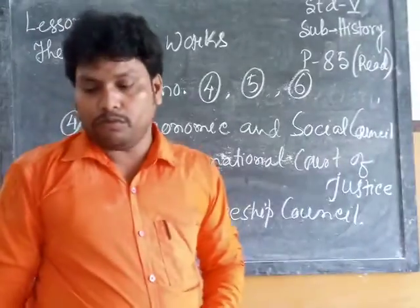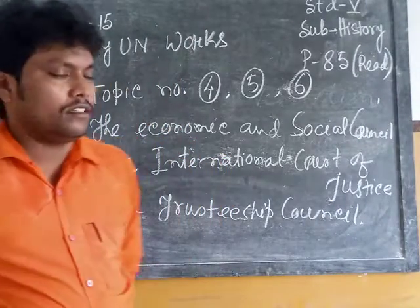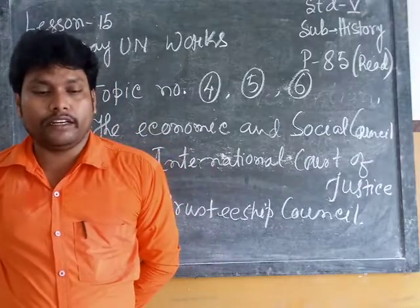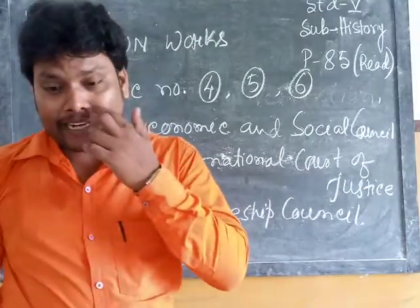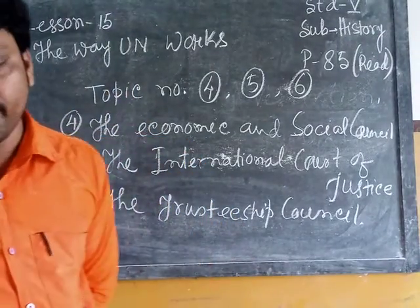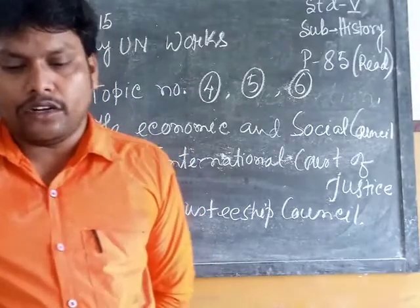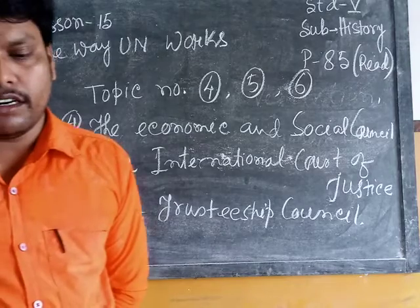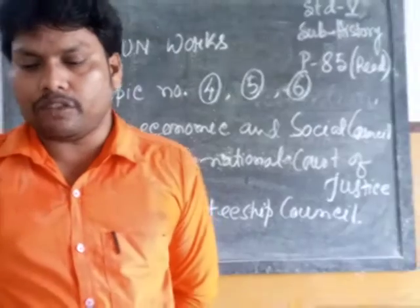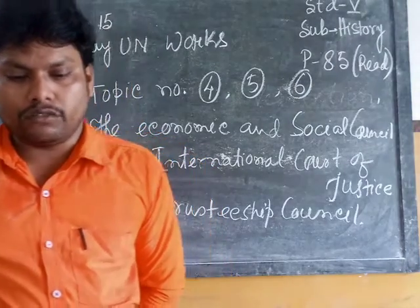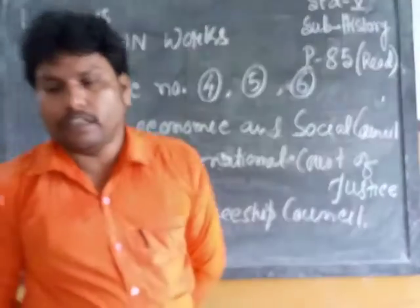Now on page number 85, we will discuss three other main organs. The Economic and Social Council — these main organs of the United Nations are entrusted with upholding human rights in countries and promoting better ways of living related to health, education, and social progress. It has 54 members.